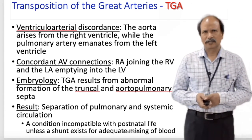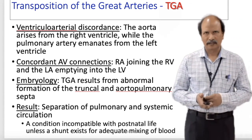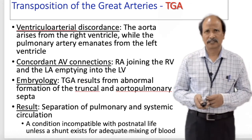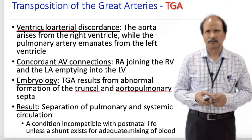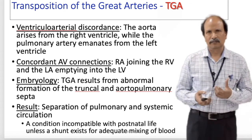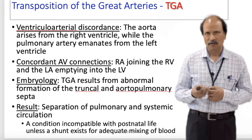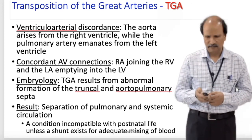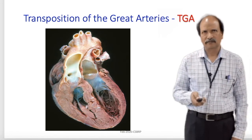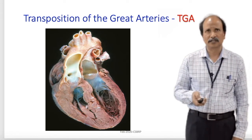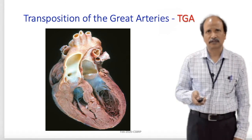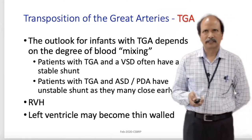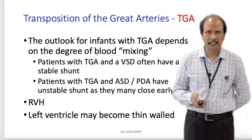In transposition of great arteries, the aorta takes origin from the right side and the pulmonary artery takes origin from the left side of the heart. This results in a condition incompatible with life. There should be some communication in order to make life compatible — so the patient may have a PDA or interventricular septal defects; otherwise it is incompatible with life. You can see in this image the right side of the heart connected to the aorta and the left side connected to the pulmonary trunk.